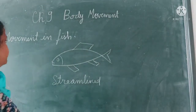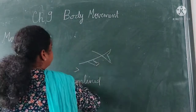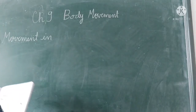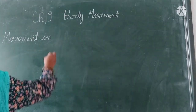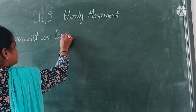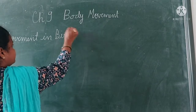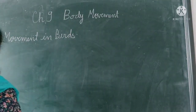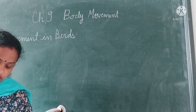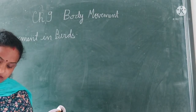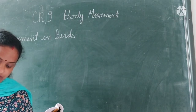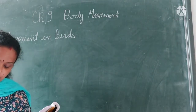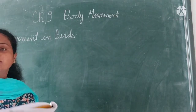Next is movement in birds. Most birds can fly, some can run, some can swim, but some use a combination of these modes of locomotion. So how do they do all this? We will study that right now.